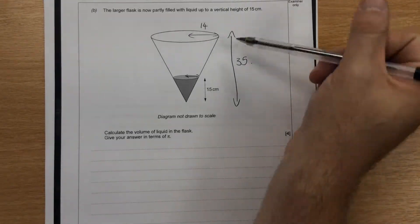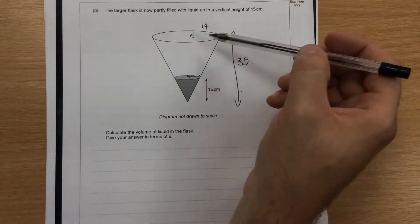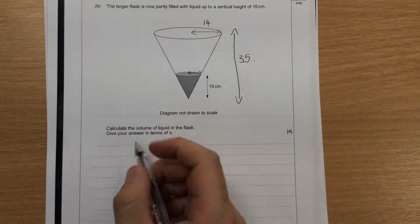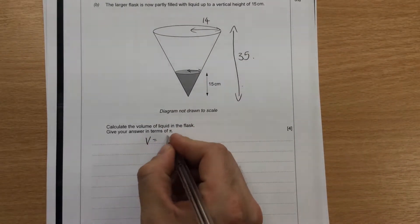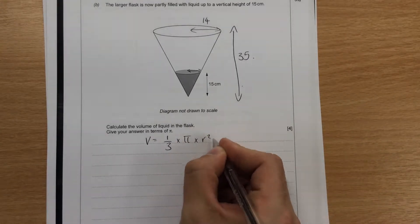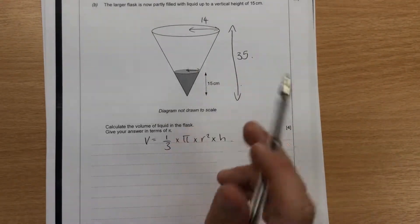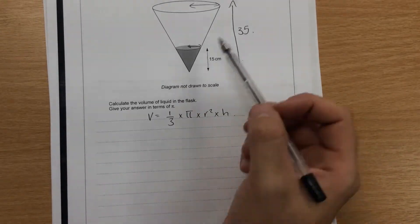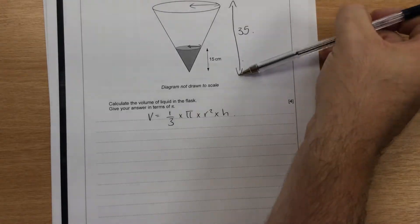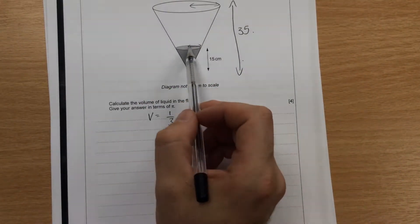We can either use this 35 and 15 to find out what the scale factor is, or we can use the 14. But we're going to have to find this radius here so that we can use the formula volume equals a third times pi times r squared times h. So we know h is 15, but what we don't know is r at the moment. So we can use the 35 and the 15 because we know that the height of the large one is a full 35. So we can use that to find this radius in here.